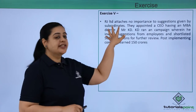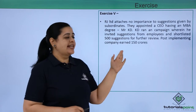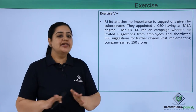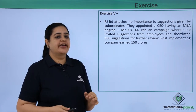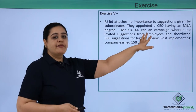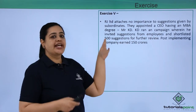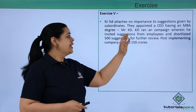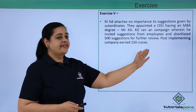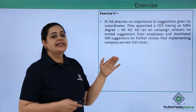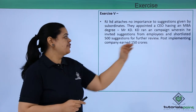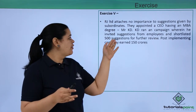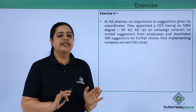The next exercise is about a company called RJ Limited. RJ Limited attaches no importance to suggestions given by subordinates — the managers are not interested in whatever suggestions are given by subordinates. They appointed a CEO who is an MBA, named Mr. KD. KD ran a campaign wherein he invited suggestions from employees and shortlisted 500 suggestions for further review. After review, he implemented some of those suggestions.